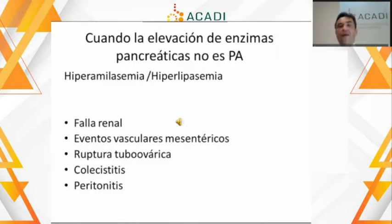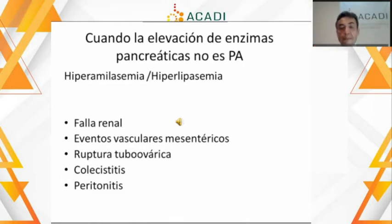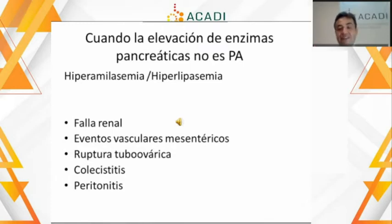Recordar también que pueden haber elevaciones no pancreáticas de la amilasa, como en el paciente con falla renal que vive con hiperamilasemia. La isquemia vascular mesentérica es una causa bien conocida de elevación marcada de la amilasa, así como la ruptura de un embarazo tubovárico. En grados leves de hiperamilasemia, por debajo de más de tres veces del límite superior de lo normal, pueden verse en colecistitis o coledocolitiasis leves.